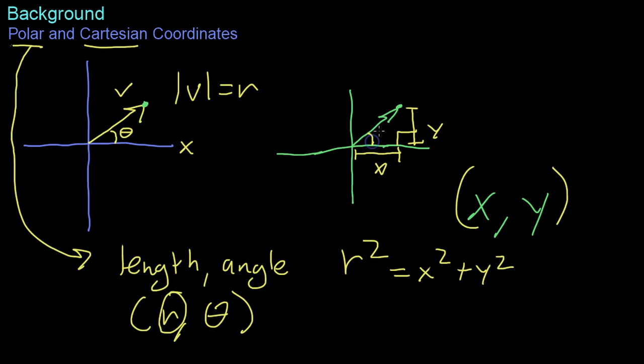Likewise, you can use trig with this angle theta to relate x and y to R and theta together. x would be R cosine theta, because cosine theta equals x over R, adjacent over hypotenuse. And y would equal R sine theta, because y is on the opposite side, and sine is opposite side over hypotenuse.